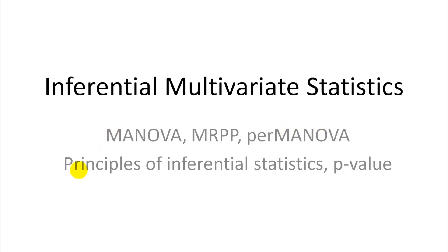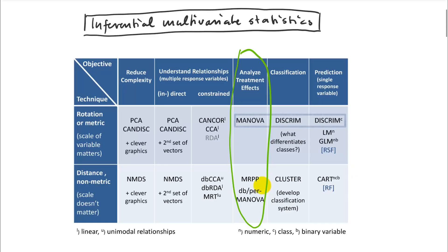Before we do that, I want to briefly cover a principle of inferential statistics and what the p-value really means, because there tends to be confusion around the interpretation of these statistics. We'll be covering the multiple response permutation procedure and the distance-based permutational MANOVA as a distance-based alternative to the multivariate analysis of variance. Inferential statistics are restricted to this column and also the constrained gradient analysis column.